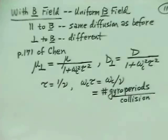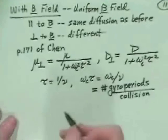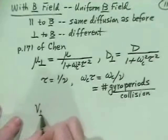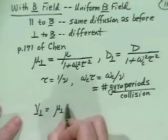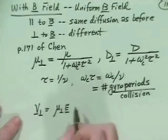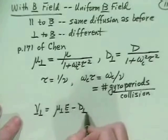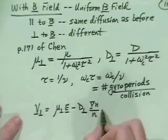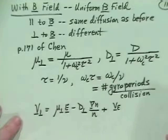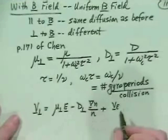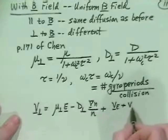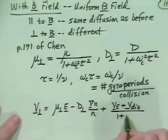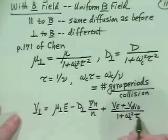Using those expressions, the perpendicular flow velocity is the perpendicular mobility times the electric field minus the perpendicular diffusion coefficient times grad n over n. You also have the E cross B drift and the diamagnetic drift, both of which get divided by one plus omega_c squared tau squared.